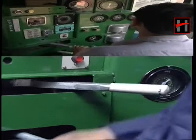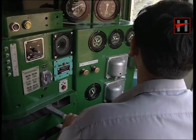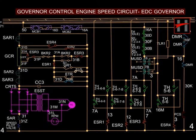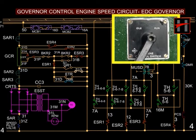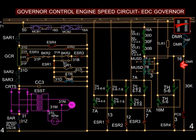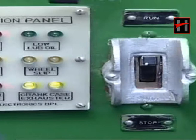To raise the engine speed, the following conditions have to be fulfilled: the engine control switch (ECS) should be in run position, PCS and the DMR should be in pick-up position, and the multiple unit stop device should be in run position.